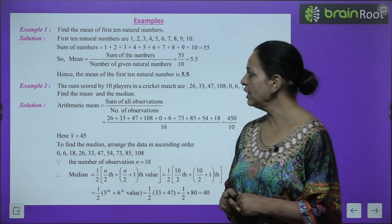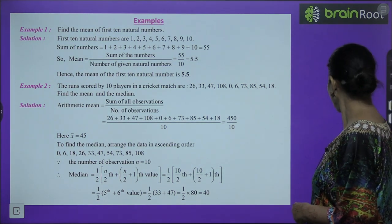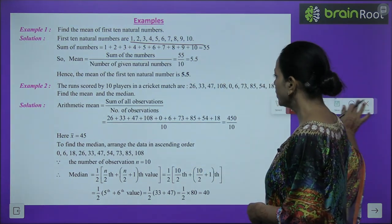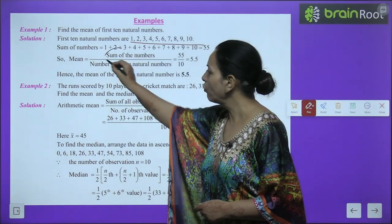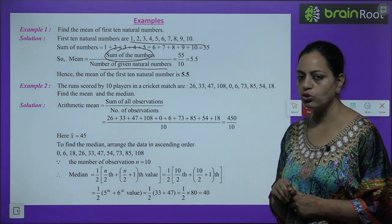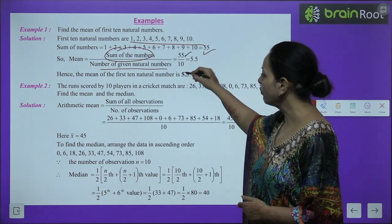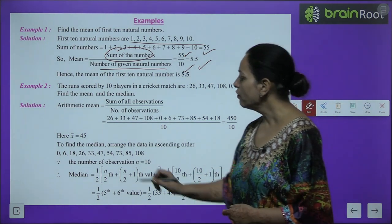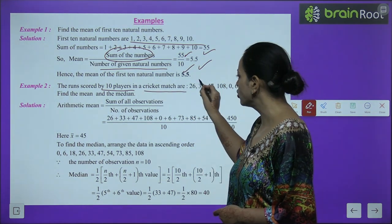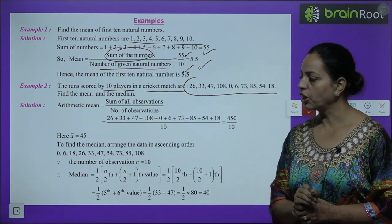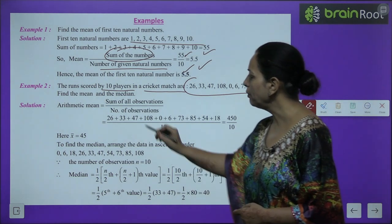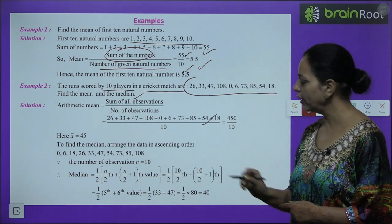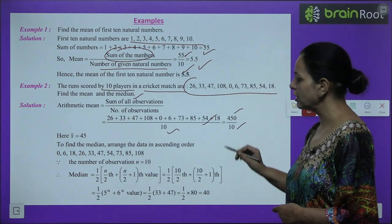Example 1: Find the mean of the first 10 natural numbers (1 to 10). Mean = sum of numbers divided by count. Their sum is 55, divided by 10, gives 5.5. Example 2: The runs scored by 10 players in a cricket match are given. Find the mean and the median. Adding all runs and dividing by 10 gives the mean = 45.